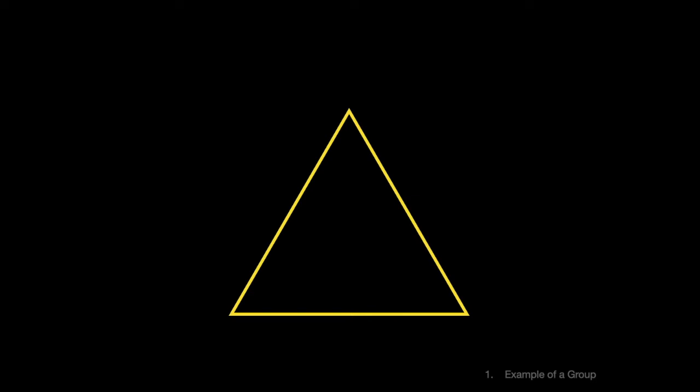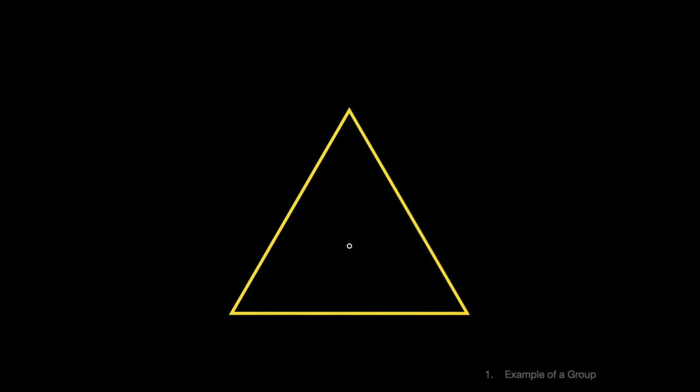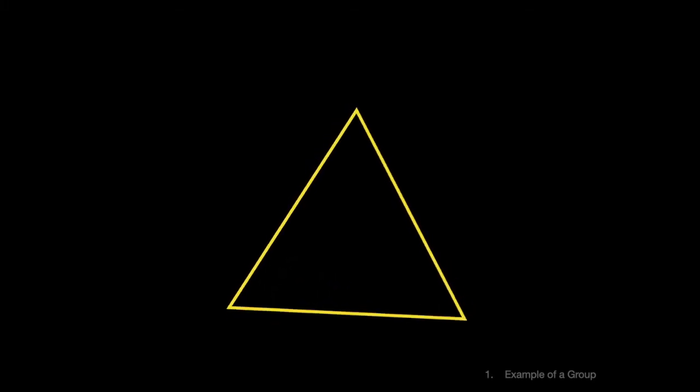A couple of examples. You can rotate the triangle 120 degrees to the right. Or, doing nothing technically leaves the triangle in the same position, so let's count that as well. Take a second, pause if you like, and come back when you're ready for the answer.